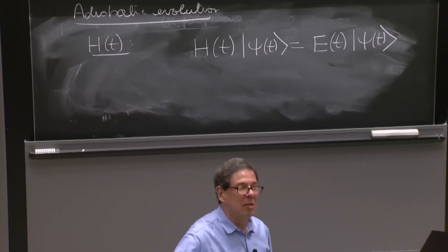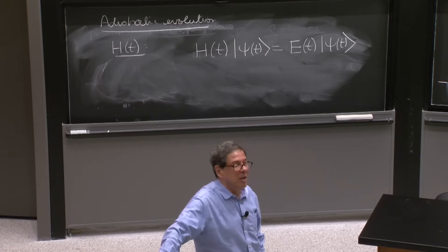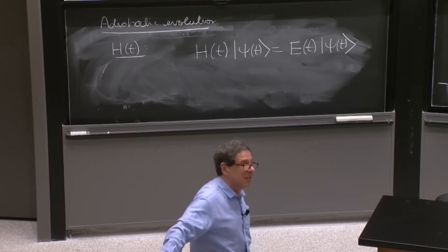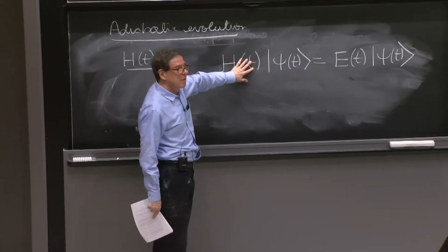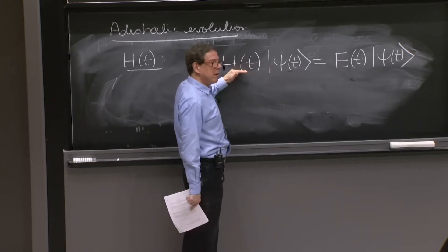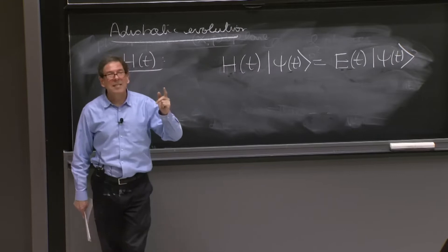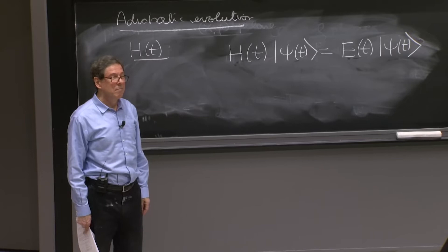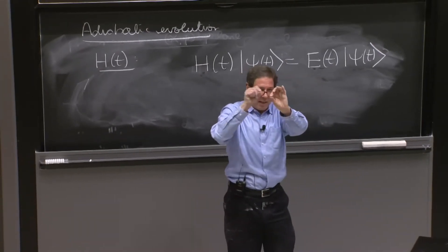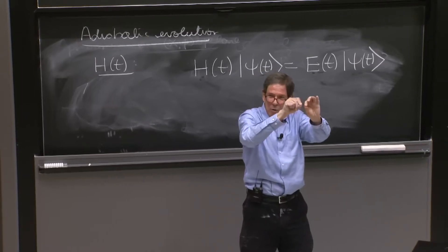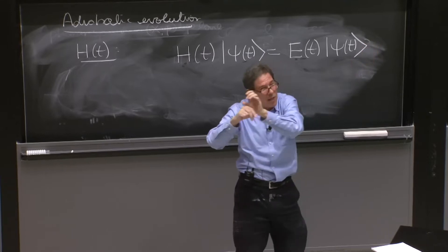If this equation doesn't look totally strange to you, you're not looking hard enough. It is a very strange equation. It looks familiar — it looks like everything we've always been writing, but it's not. Suppose you look at the Hamiltonian at time 0. The state at time 0 would be an eigenstate of the Hamiltonian at time 0 with some energy E(0). This is what's called an instantaneous eigenstate — you find the eigenstate at t=0, at t=ε, at t=2ε each time, and piece together a time-dependent energy eigenstate with a time-dependent energy.